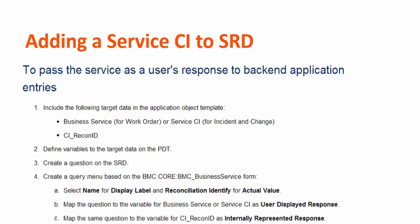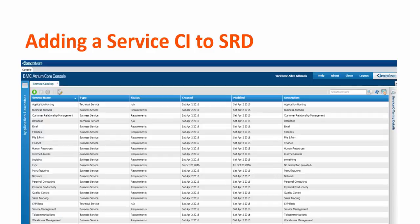Select name and the display label for reconciliation identity and actual value. Map the service CI as a user-displayed response and CI reconciliation ID as an internally represented response.